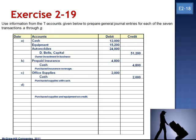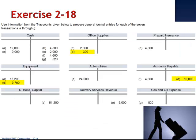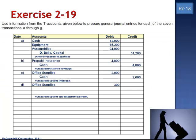In Letter D, we purchased supplies and equipment on credit. We see in the T-accounts that we debited office supplies for $3,000, debited office equipment for $9,700, and credited accounts payable for $10,000. We parallel that in our journal entry, debiting office supplies, debiting equipment, and crediting accounts payable.